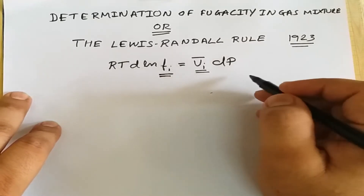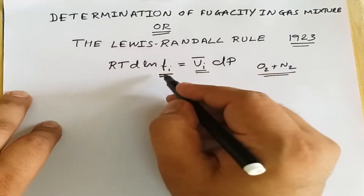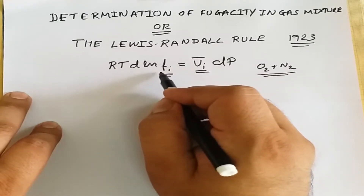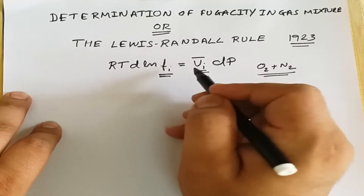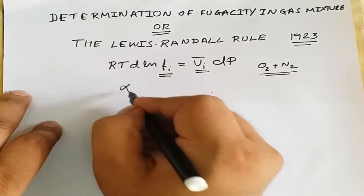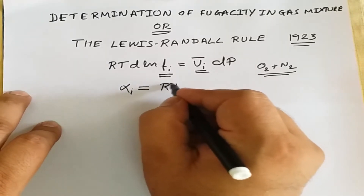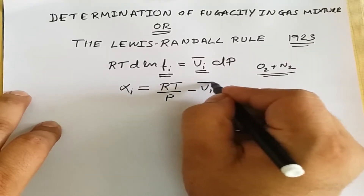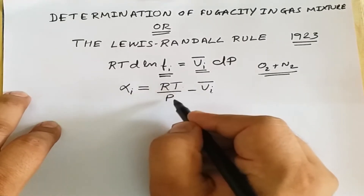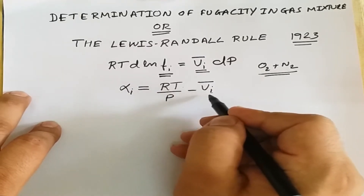So if we are mixing oxygen and nitrogen, f_i will be the fugacity of oxygen and v_i_bar will be the partial molar volume of oxygen. Similarly, f_i can be the fugacity of nitrogen and v_i_bar the partial molar volume of nitrogen. We also know that the departure α_i can be written as RT/p minus v_i_bar, where α is the departure and is a function of temperature, total pressure, and composition of the mixture.